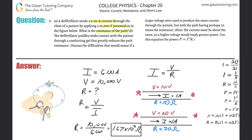The defibrillator paddles make contact with the patient through a conducting gel that greatly reduces the path resistance. Discuss the difficulties that would ensue if a larger voltage were used to produce the same current through the patient, but with the path having perhaps 50 times the resistance. Well, we actually just kind of talked about that. If the current's the same and a larger voltage is used, well, obviously the resistance should be greater. In this particular case, they're telling us that it's a 50 times greater voltage. So I'm just going to get rid of this little picture. So for letter B.